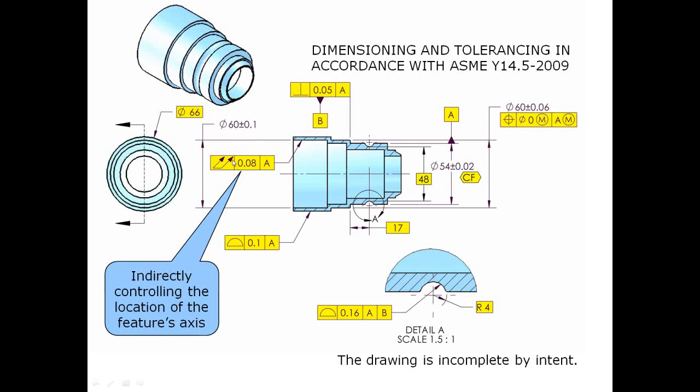And then we have this runout tolerance. Could have been circular, happens to be total with the two arrows. And it's saying I want to check the surface to make sure it's not varying too much relative to this axis. So it's picking up form variation, changes in size, and if it's not centered. So kind of indirectly this runout is keeping the cylinder centered on the datum axis.